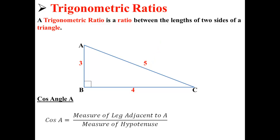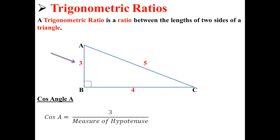Next, we'll find cosine of A. First, we find the measure of the leg adjacent to A. In this case, it's 3. Next, we put in the measure of the hypotenuse again, which is 5. So the cosine of A is 3 over 5, or 0.60.